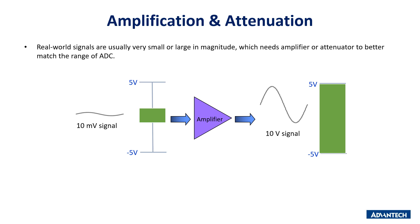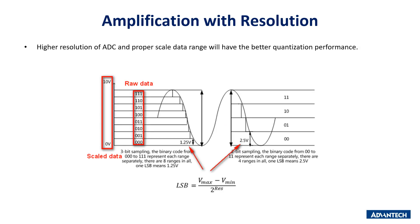After the multiplexer, the signal passes through amplification or attenuation because real-world signals are usually very small or large and need an amplifier or attenuator to modify the signal to match the ADC's range. Regarding resolution, with higher ADC resolution and a proper scaled data range, you will get better quantization performance.